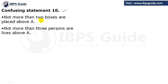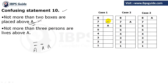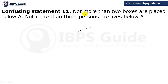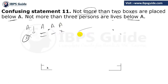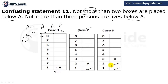The tenth statement: not more than 2 boxes are placed above A. This is a little different from previous ones. When they say 'not more than 2 above A,' maximum is 2, meaning it can be 2, it can be 1, or it can be none. They are saying not more than 2. The eleventh statement is: not more than 2 boxes are placed below A. Same thing — they are specifying the maximum positions. Below A there cannot be 3; it can be 2, it can be 1, or it can be none. If A is on the 4th floor, there would be 3 below — but they say not more than 2, so that is not possible.